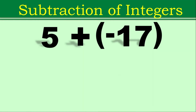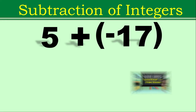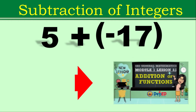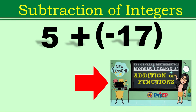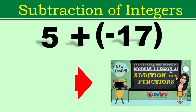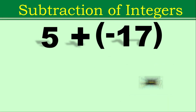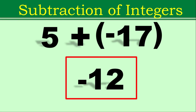So how do we solve 5 plus negative 17? We will be using the rules in adding integers. You may go back to our video for Lesson 3.1 about addition of integers. The result is negative 12.